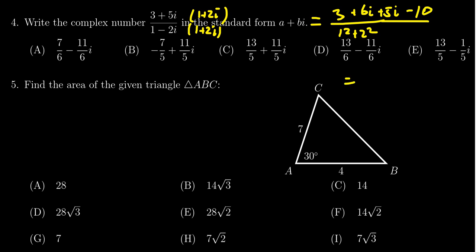Simplifying this, the real parts in the top, you get 3 minus 10, which is negative 7. For the imaginary parts, you're going to get 6i plus 5i, which is 11i. In the denominator, you have 1 plus 4, like so.